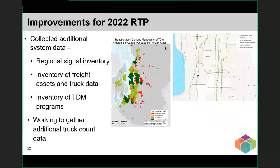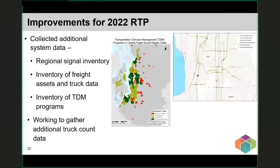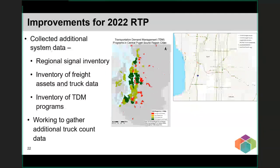Continuing with additional data collection efforts, we have collected a lot of information over the last year on various elements of the system, including for the first time an inventory of signals on the regional network, a better understanding of our freight network, and an inventory of transportation demand management programs throughout the region. We are continuing to pursue additional efforts to better understand the system and improve our visualization tools to share this information more broadly. For example, a map could include congested corridors and the presence of coordinated traffic signals, or the location of transit routes and the presence of transit signal priority — providing better information for both regional and local planning.